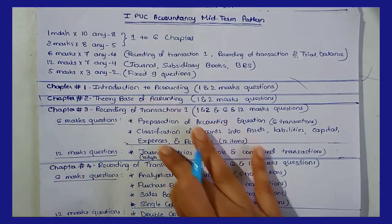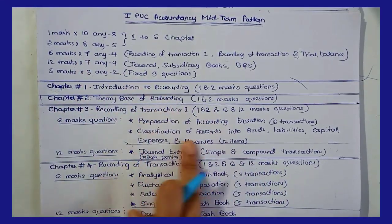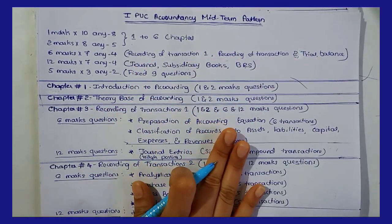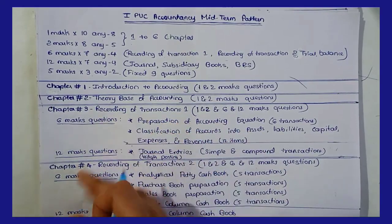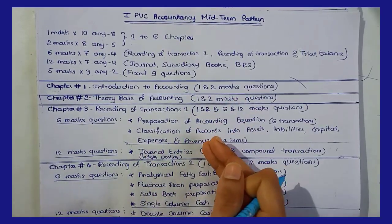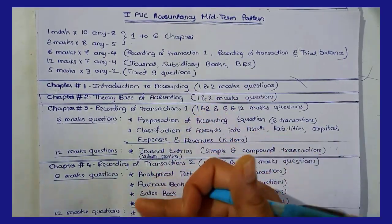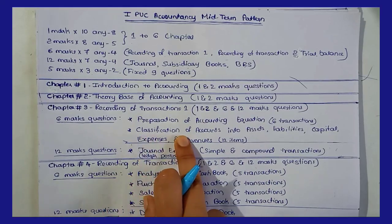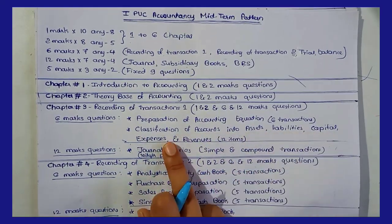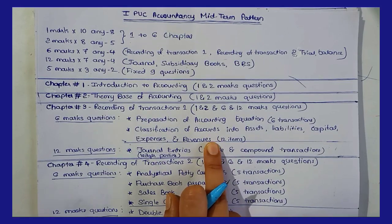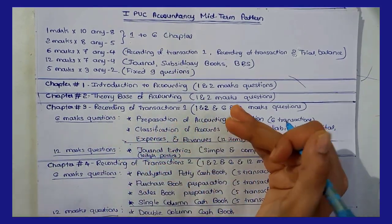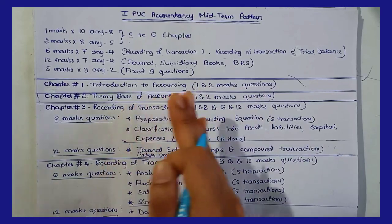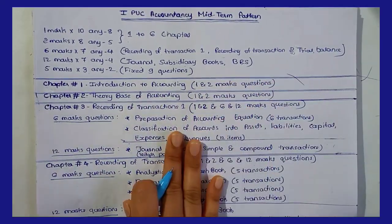The questions in this chapter are increasing. The second topic is classification of accounts into assets, liabilities, capital, expenses, and revenues. So we have to make a bifurcation of accounts — a classification of assets, liabilities, capital, expenses, and revenues. We have to solve problems on this.